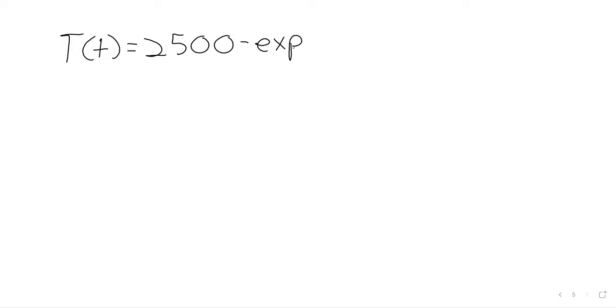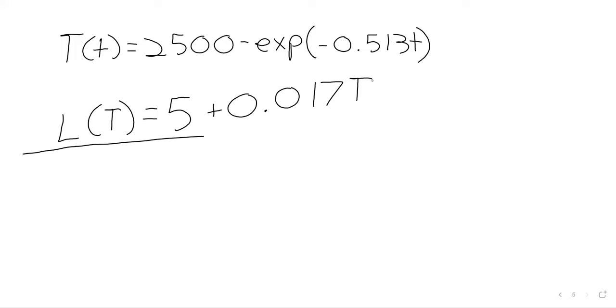Here is Newton's law of heating. I'm going to use exp for exponential, just because I think it's easier to read if we don't have a bunch of superscripts. T(t) = 2500 - exp(-0.513t). There is the temperature after T hours. And as far as the length, thermal expansion is a linear process. A realistic length: this formula, if the rod is five inches at zero degrees, is five plus 0.017...